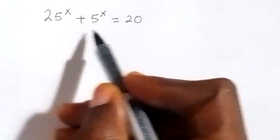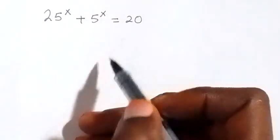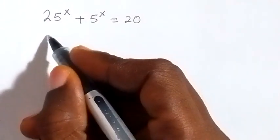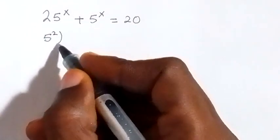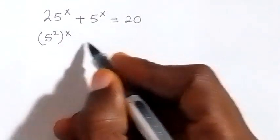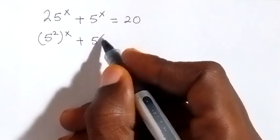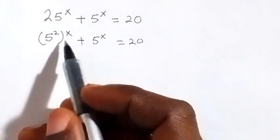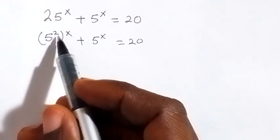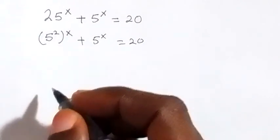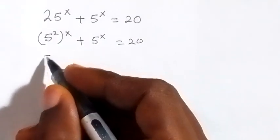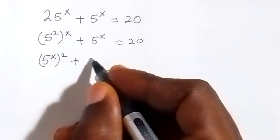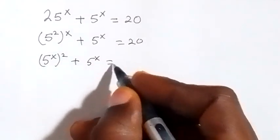Solve this problem: 25 raised to power x plus 5 raised to power x equals 20. From here we can write 25 as 5 squared, then raised to power x, plus 5 raised to power x equals 20. From the law of indices, this becomes 5 raised to power x, then raised to power 2, plus 5 raised to power x equals 20.